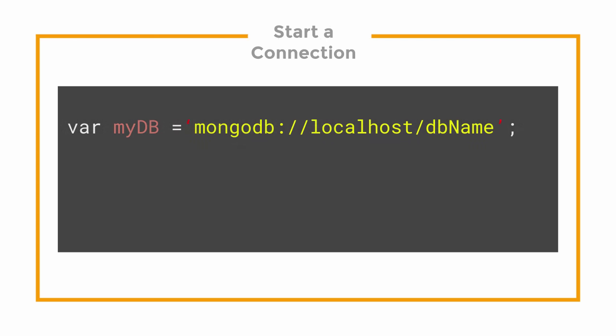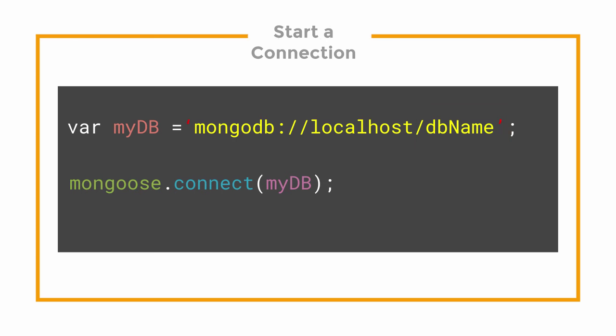With the schema all set up, all we need to do now is establish a connection to MongoDB, and this is very simple. First, we create a variable assigned to our instance of the database. The db name can be anything that you want — it just represents the name of the database that we use. Then we just use mongoose.connect to connect to it.